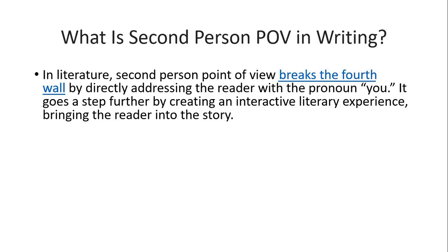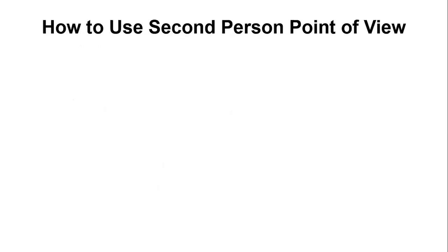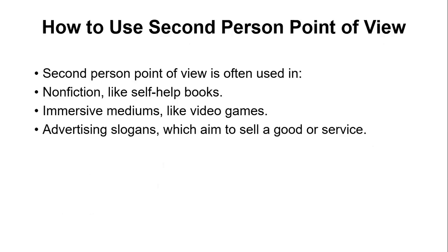In literature, second person point of view breaks the fourth wall by directly addressing the reader with the pronoun 'you.' It creates an interactive literary experience by bringing the reader into the story. Second person point of view implies that the reader is either the protagonist or a character, and the events are happening to them. In simple terms, when you use 'you,' 'your,' 'yours,' it is second person. Second person is often used in non-fiction like self-help books, video games, and advertising slogans.